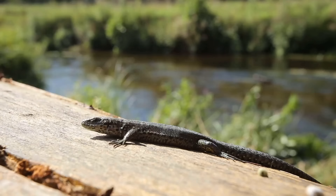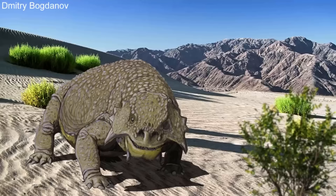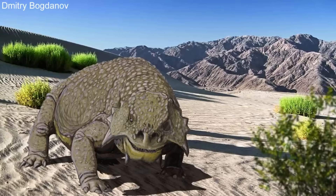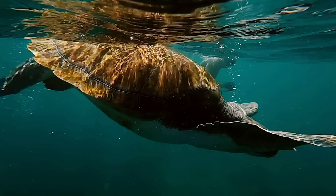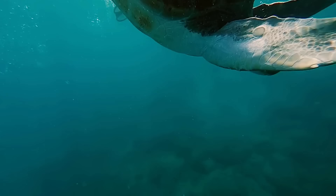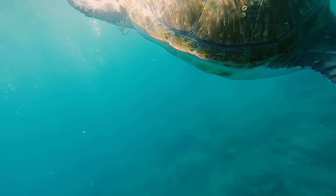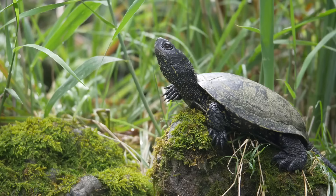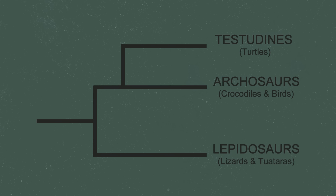All reptiles alive today — like crocodiles, lizards, and snakes — are known as diapsids, which all descended from a common ancestor over 300 million years ago. Around that time there was another, now-extinct group called the anapsids. The anapsids were very dominant during the Permian but went extinct around 200 million years ago in the late Triassic. Due to similarities in skull structure, it was thought turtles may belong to an ancient lineage of anapsids that survived to the present day. However, modern DNA studies have shown that is very unlikely.